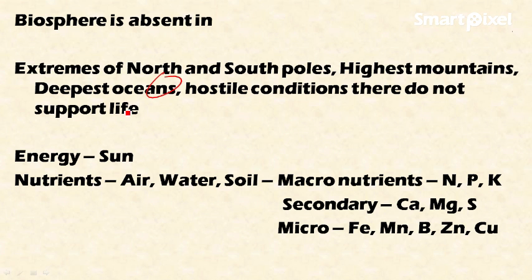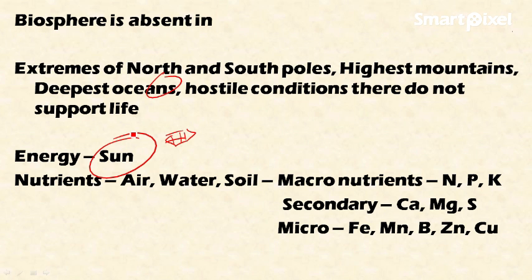We all know that the primary source of energy is the Sun. In the biosphere, the Sun sustains all living beings. With the help of energy from the Sun, plants produce their own food, and secondary consumers depend on the plants for survival — then follows the chain of life.